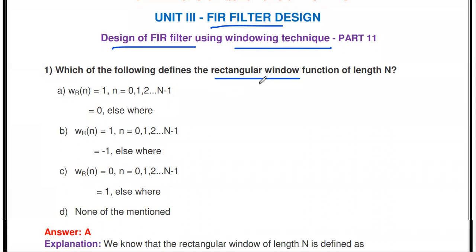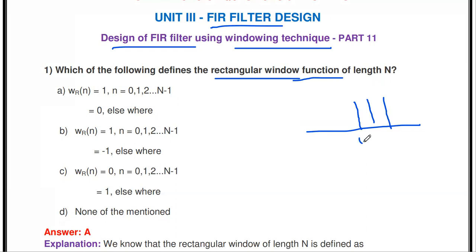The first question: in order to design the digital FIR filter, which of the following defines the rectangular window function of length capital N? The rectangular window function has a constant amplitude of 1 for the time n ranging from 0 to capital N minus 1, and zero amplitude at all other times. That's why the shape of this window is rectangular — it is called the rectangular window function. The answer is: W_R(n) = 1 for n = 0, 1, ..., N−1, and 0 elsewhere.